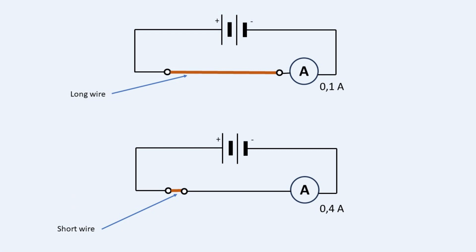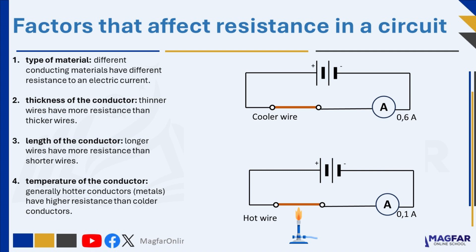In a circuit where an ammeter is connected in series, a long wire gives a reading of 0.1 amps, while a short wire of the same material and thickness gives a reading of 0.4 amps. This shows that less electric current passes through the longer wire, meaning it has more resistance — therefore, the longer the wire, the greater its resistance. Resistance is also influenced by the temperature of the conductor. Hotter conductors offer more resistance than cooler conductors — the hotter the conductor becomes, the greater its resistance and the smaller the current that it lets through.